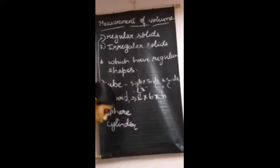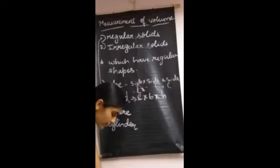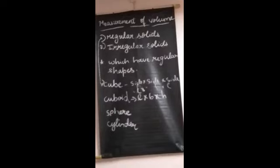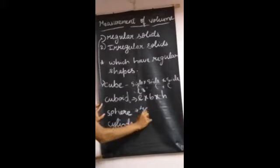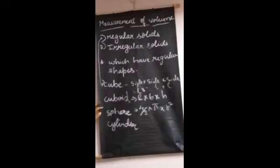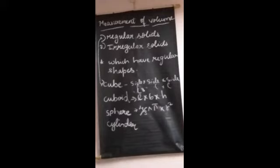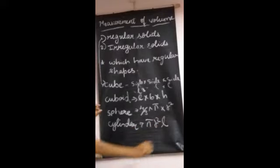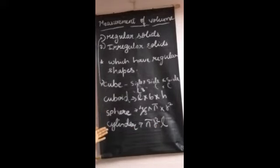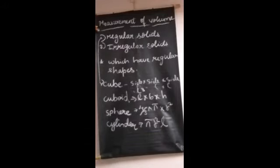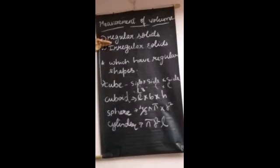If we take a sphere, how do we find its volume? The volume of a sphere is 4/3 × π × R². Then, volume of the cylinder is π R² L. By applying these formulas, you can find the volume of these regular solids. I think you are very clear with the regular solids, so now let me show you how to find the volume of irregular solids through an experiment.